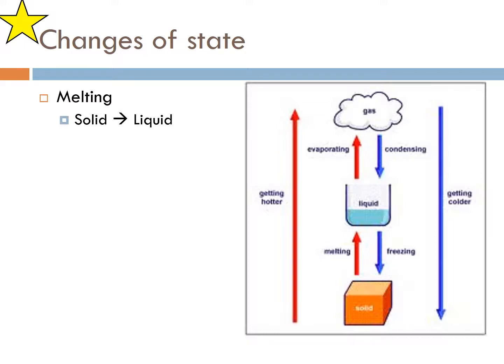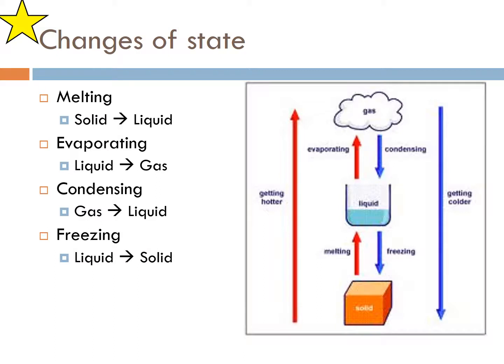Melting is solid to liquid, evaporation is liquid to gas, condensing is gas to liquid, freezing is liquid to solid. Sublimation is a new one we haven't talked about yet. Sublimation goes directly from a solid to a gas. The most common sublimated compound or substance is dry ice. Dry ice is frozen carbon dioxide, and when you put that at room temperature it sublimates into gas as you can see here.